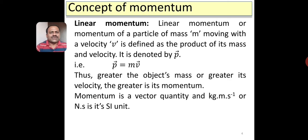p is a vector quantity. That is, linear momentum is a vector quantity and its direction is the same as that of the velocity of the particle. Therefore, if mass of the object increases, then momentum increases, and if velocity increases, then also the momentum increases. The SI unit of linear momentum is kg meter per second or Newton second.